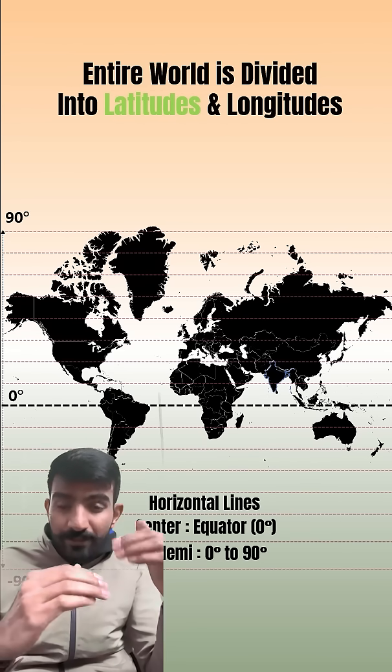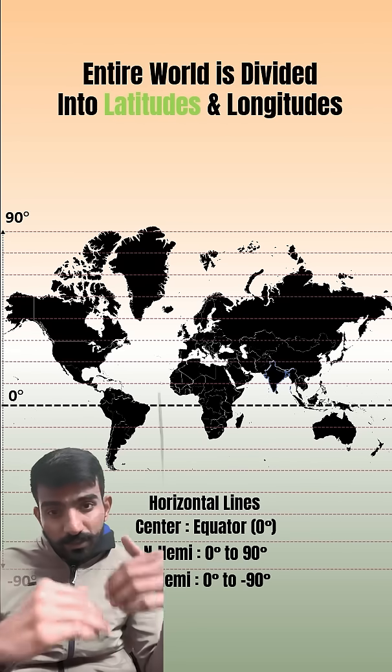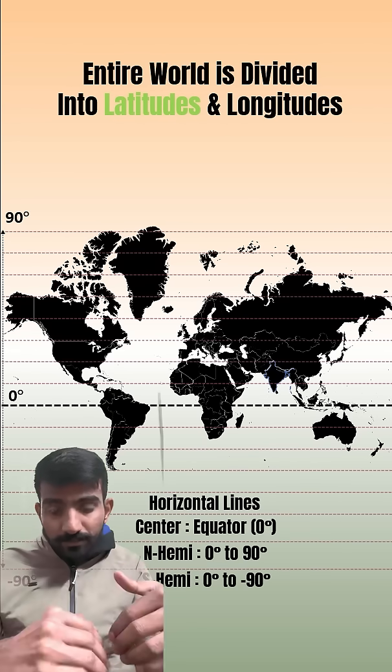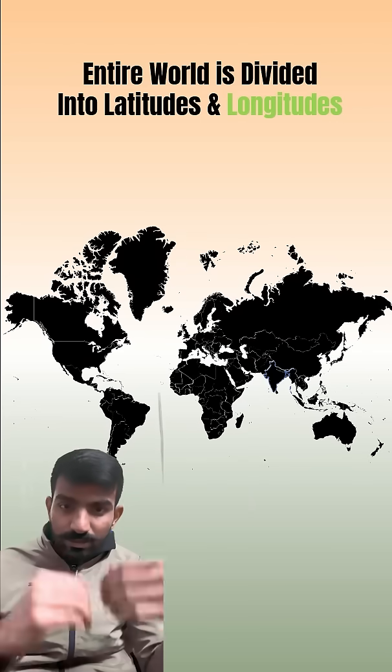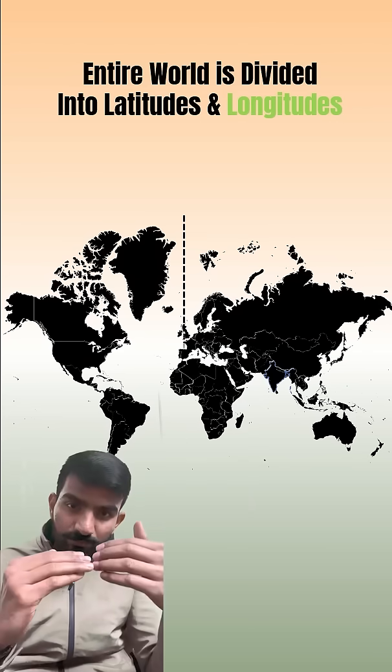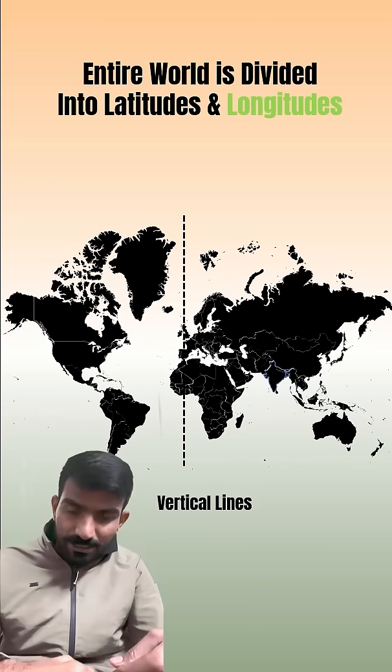All the countries that are lying below the equator are basically part of the southern hemisphere and their latitudes vary from zero to minus 90 degrees.